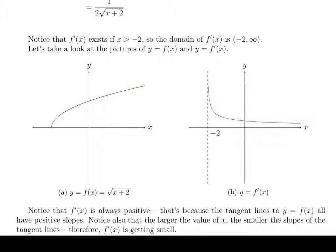First thing to notice is that f prime of x is always positive, and that's because the tangent lines to the original function all have positive slopes. If I were to draw a tangent line, it always has a positive slope no matter where you draw it. Also, we should notice that the bigger the value of x, the slopes are getting smaller.